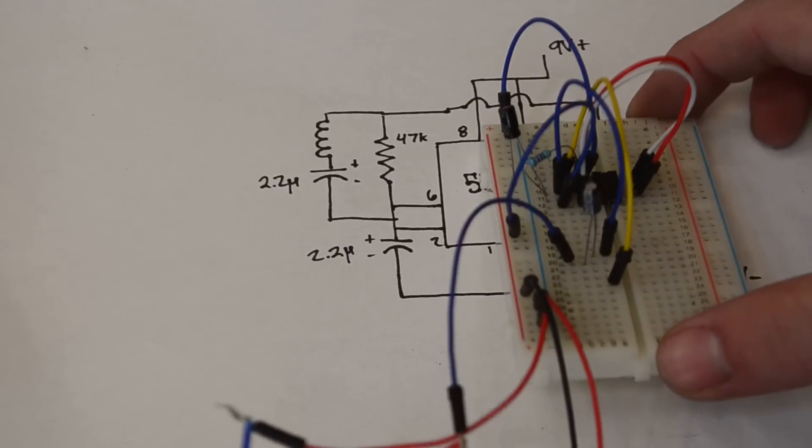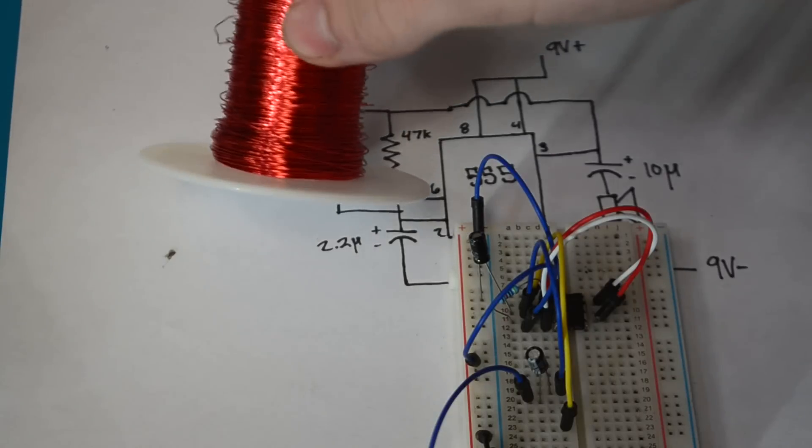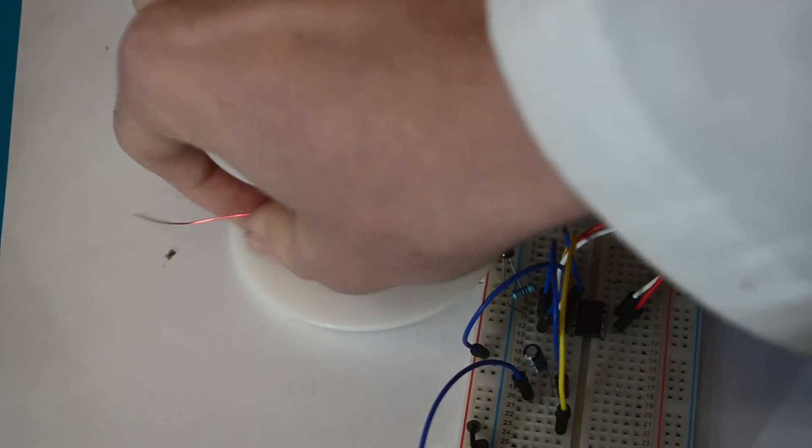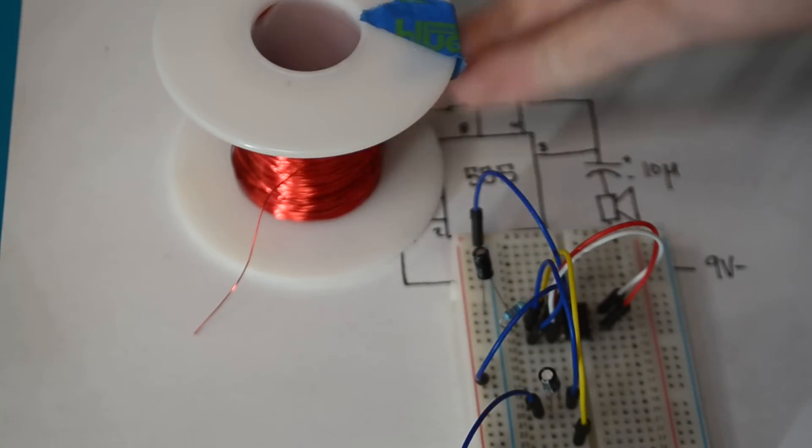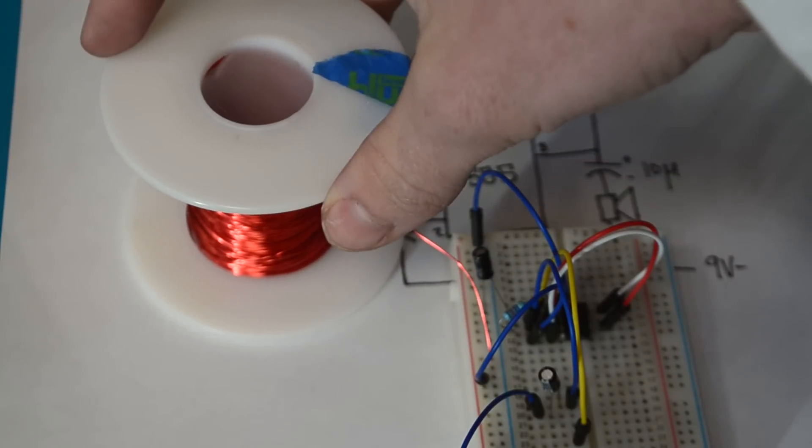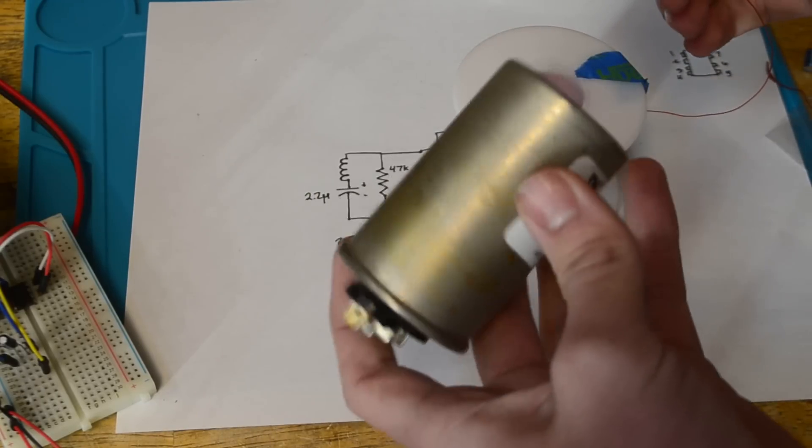Okay so I have it back to that 2.2 microfarad capacitor now. So now all that we need to do to turn this frequency generator into a metal detector is create this coil. To make the coil I'm going to be using this 26 gauge magnet wire. Magnet wire is basically just copper wire with a thin enamel coating over it so that it doesn't conduct with itself. Now although this magnet wire is a gauge of 26 you could use higher gauges. Since I don't have any of that thinner wire though I'm just going to be using this.